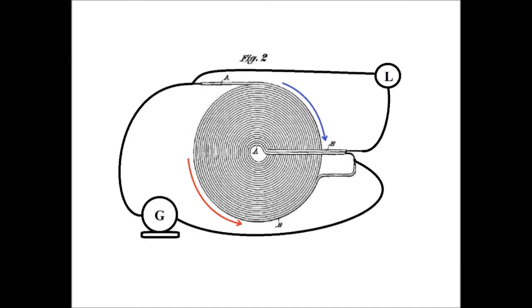You put a lot of energy into a generator to get the electricity flowing, but using the bifiler coil with a free-flowing loop in there, that energy once we get it moving is free to flow without resistance.